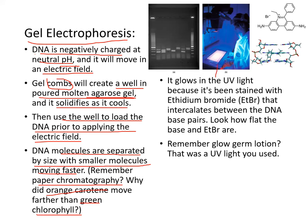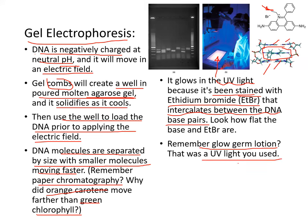You use UV light to view the DNA because it's been stained with ethidium bromide. Ethidium bromide intercalates between DNA base pairs. Here's the shape of ethidium bromide, and here it is actually intercalated with the DNA. Here are the bases — look how flat that is. Remember the glow germ lotion experiment? That was the UV light you used.